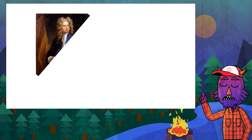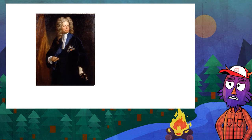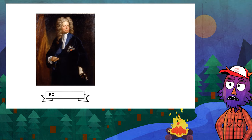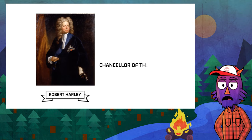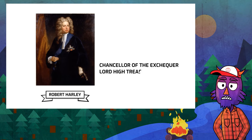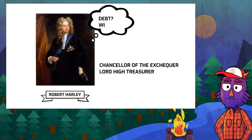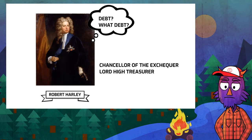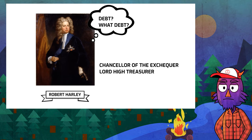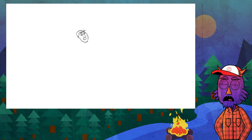Robert Harley, the then Chancellor of the Exchequer and soon to be the Lord of the Treasury, was brought in to identify the extent of the national debt. One look and he solved the entire debt issue. Just kidding — he didn't. Or let's say he couldn't. Things weren't quite organized back then.